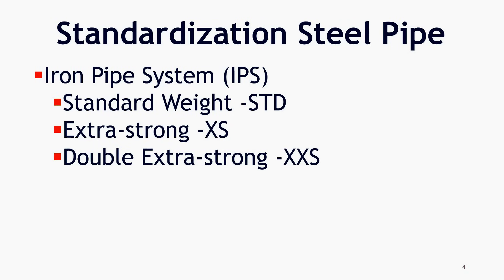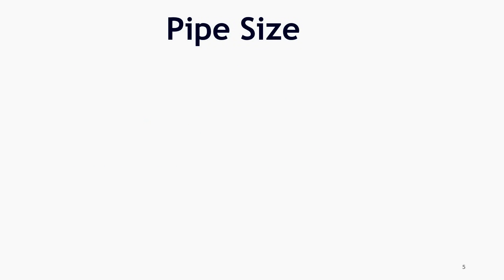With modernizing of industries and use of pipe in different pressure and temperature conditions, these three sizes were not sufficient to meet the requirement. This resulted in the concept of schedule number that combines wall thickness and diameter of the pipe.